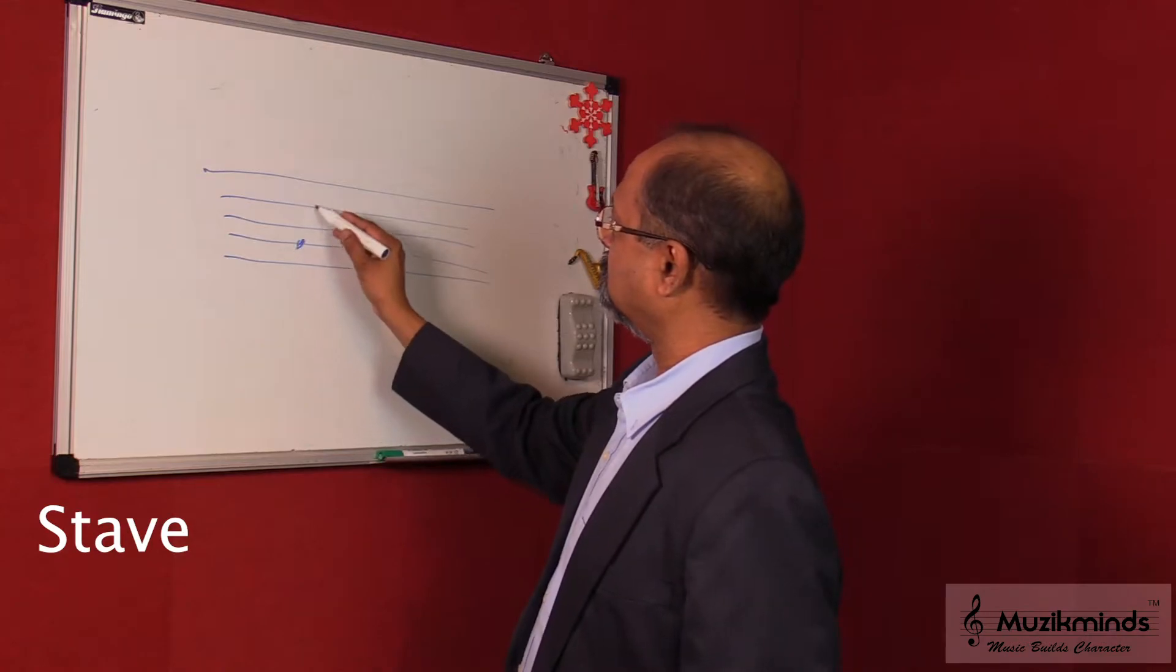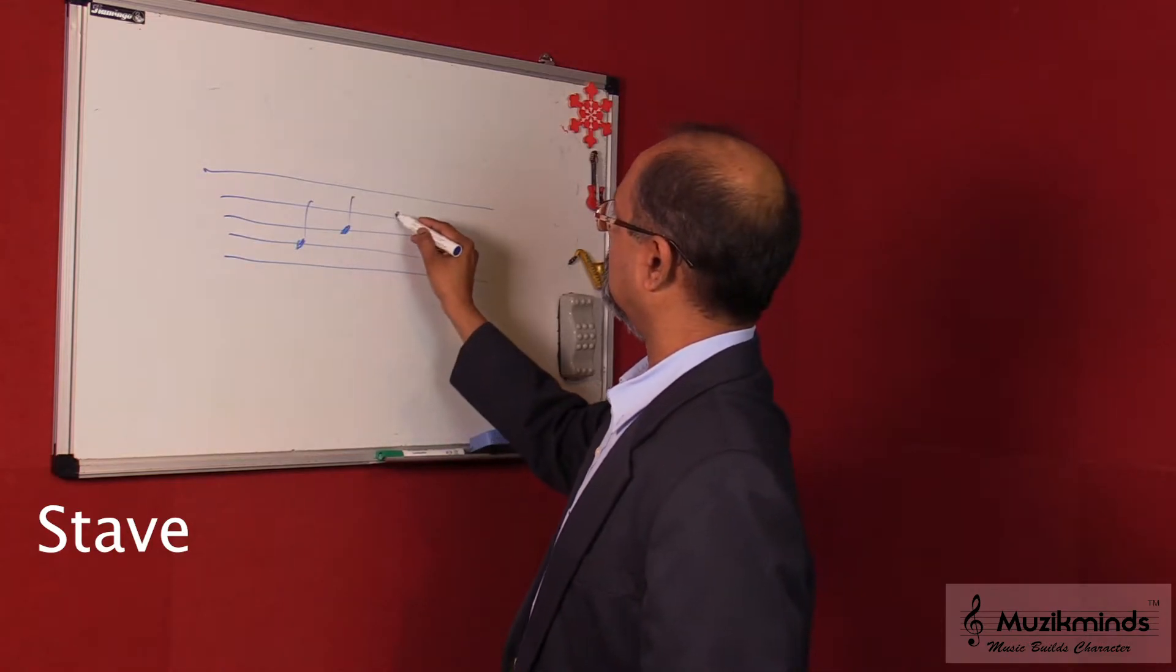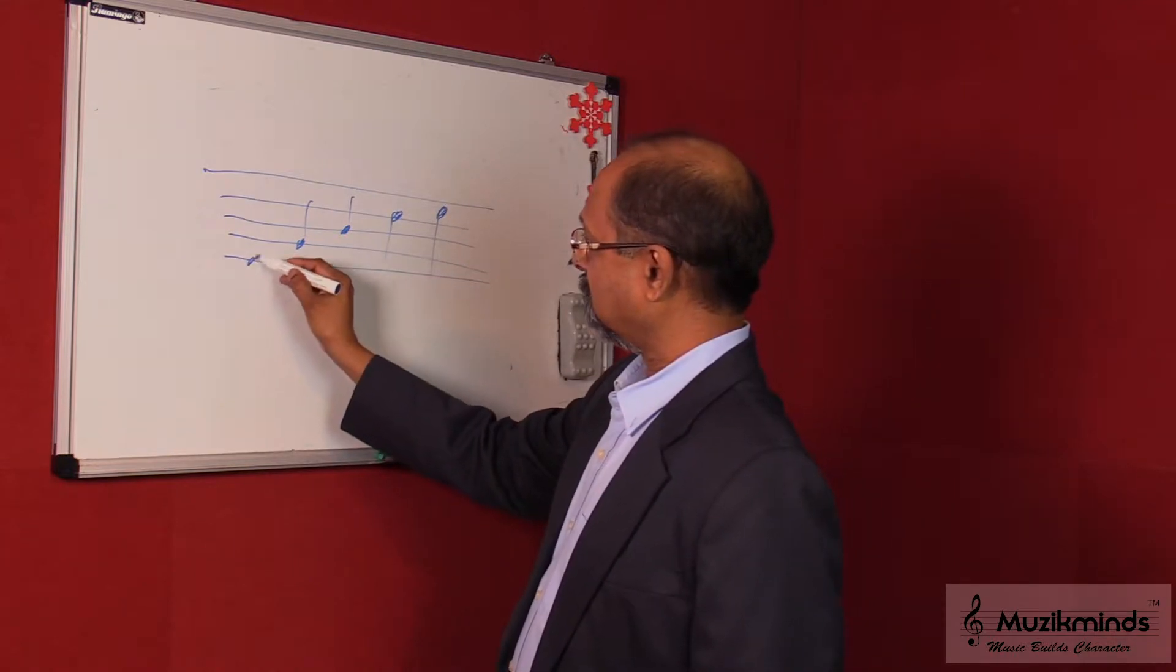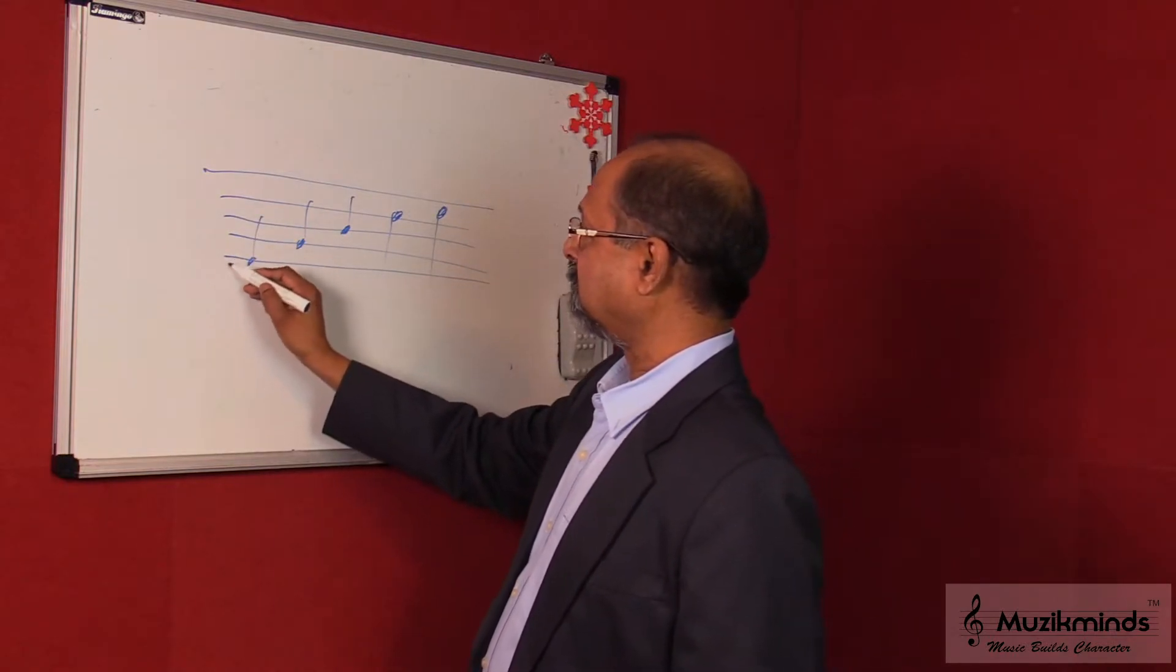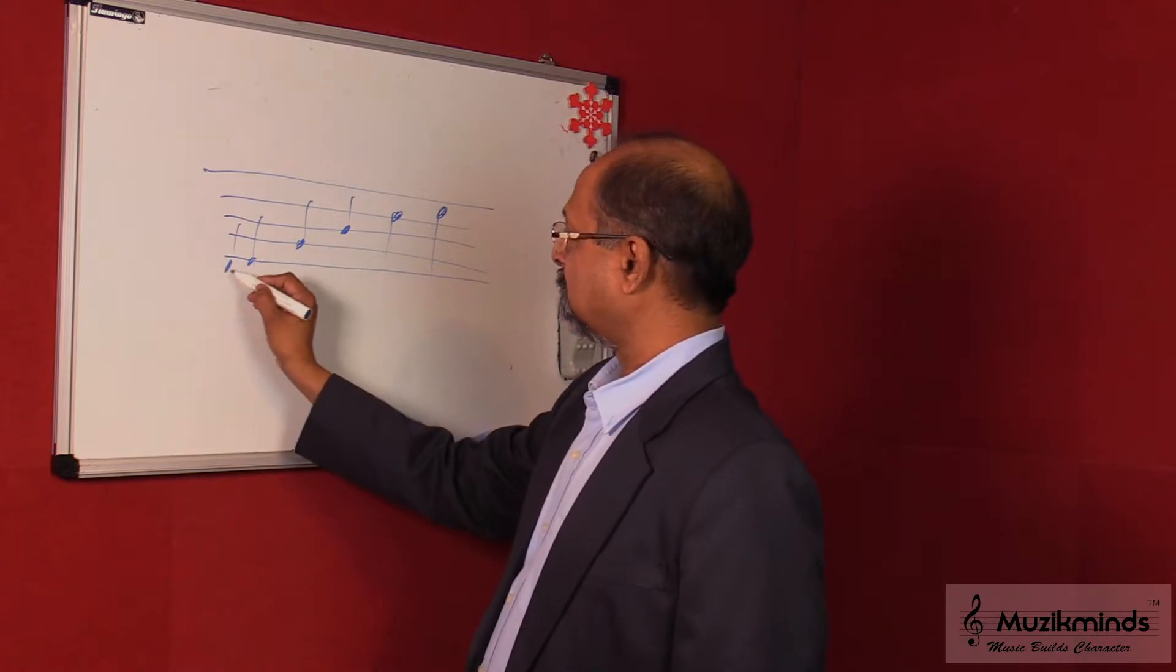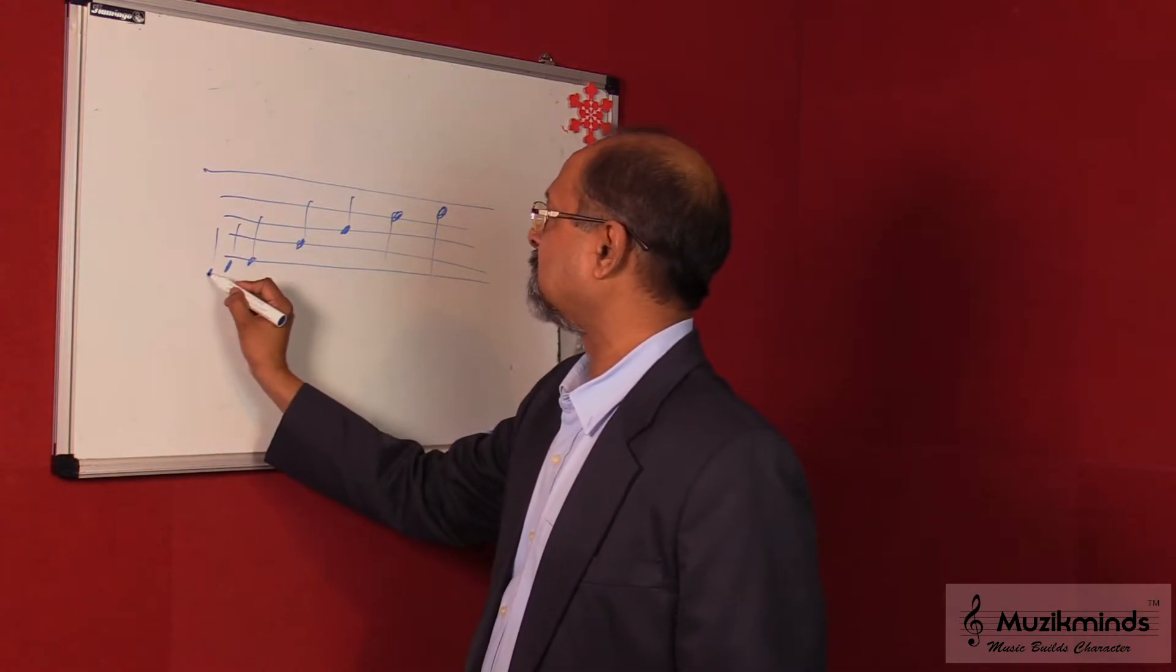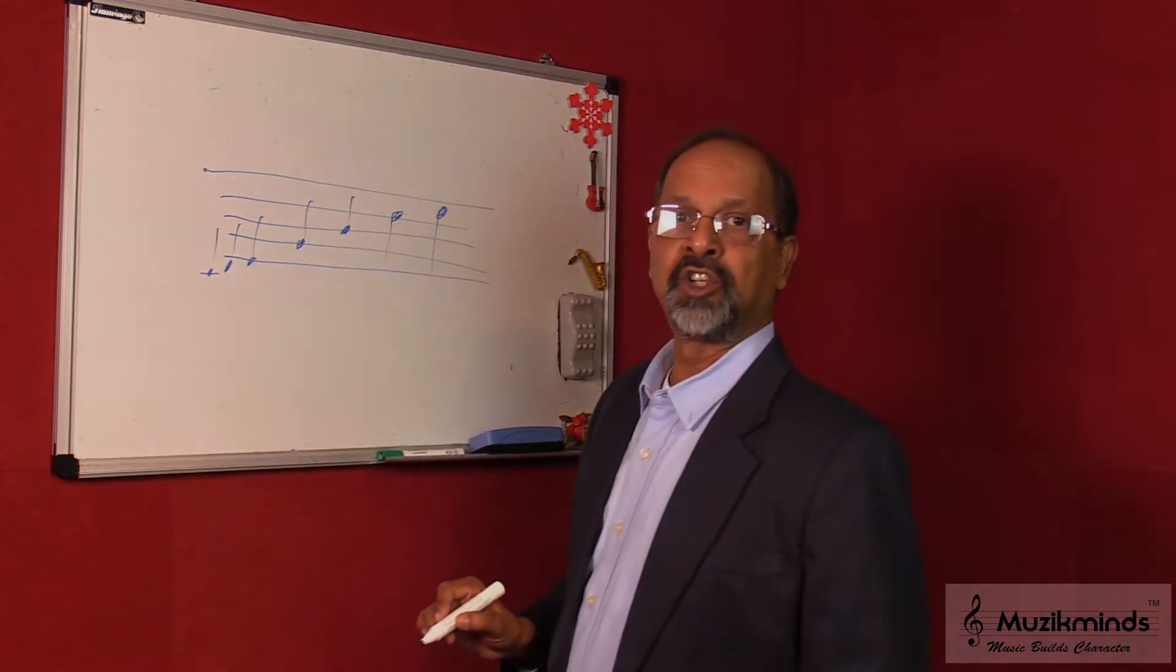So we have the notes written here. Now there would be some notes which come below the five lines. So for those notes, basically what we do is, we don't have an additional line placed here, but we just have a slight dash here.